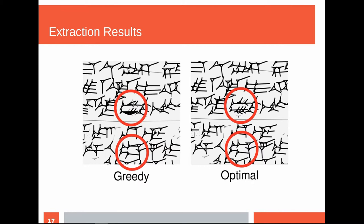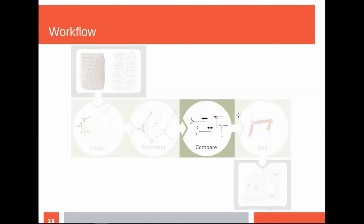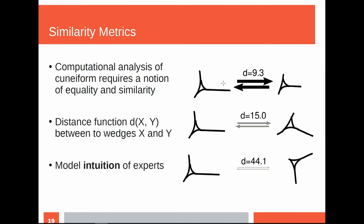At this point we have a description for wedges and we can extract those wedges from our data. So we move to the next step: finding a distance function between singular wedge-shaped impressions or between wedge symbols. For computational analysis of cuneiform — for example, to do k-means clustering or to find types of wedges — we need a distance function. A distance function needs to model the intuition of experts: if an expert says two wedges are similar or dissimilar, we need to model this with our function. We also want it to be gradual — it should not jump from identical to completely dissimilar.